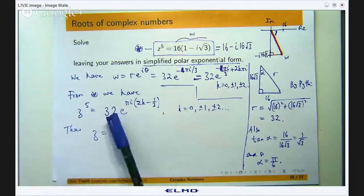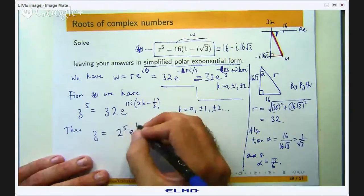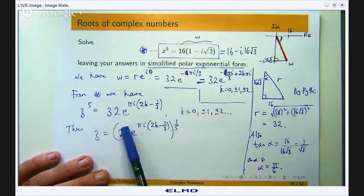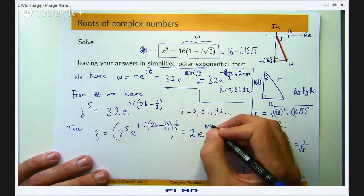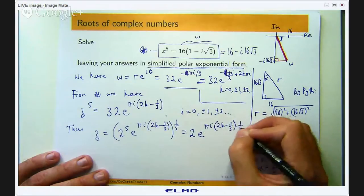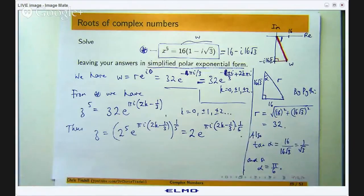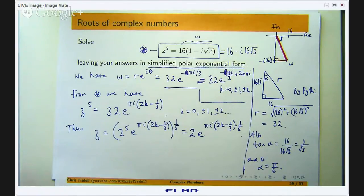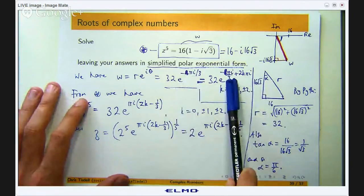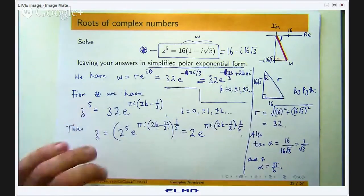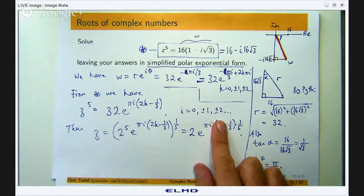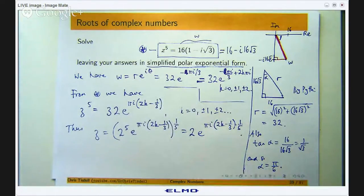Now I can take the fifth roots of both sides. I write 32 as 2 to the fifth, then use index laws to simplify so that the fifth powers cancel. This gives z equals 2 e to the i times negative 1 on 3 plus 2k all times π on 5. This step is crucial — if you did not include the 2kπ terms, you would only have one solution, but there are in fact five solutions to this problem.